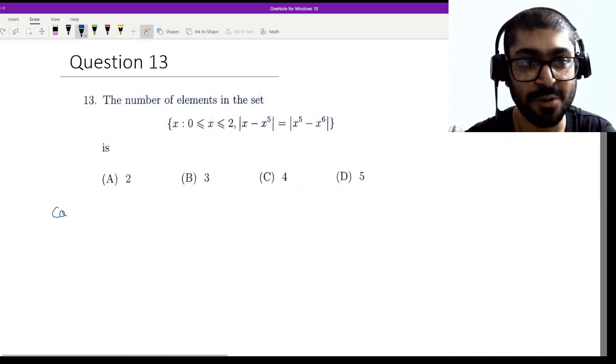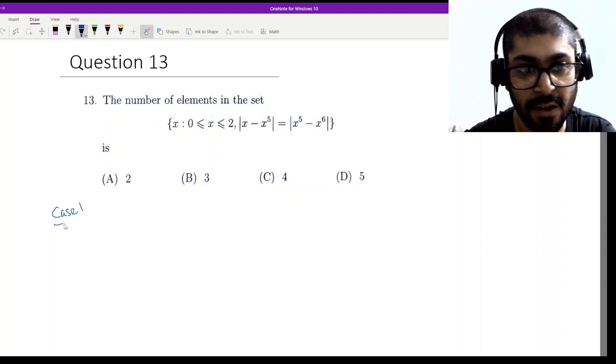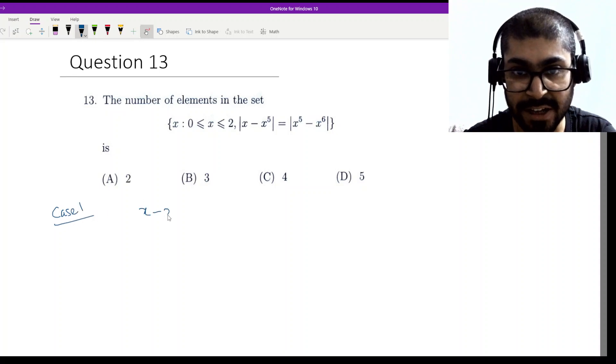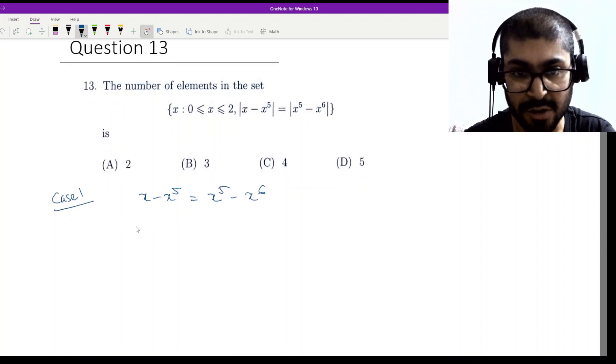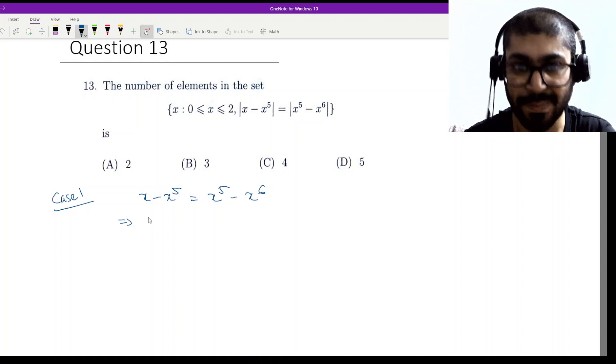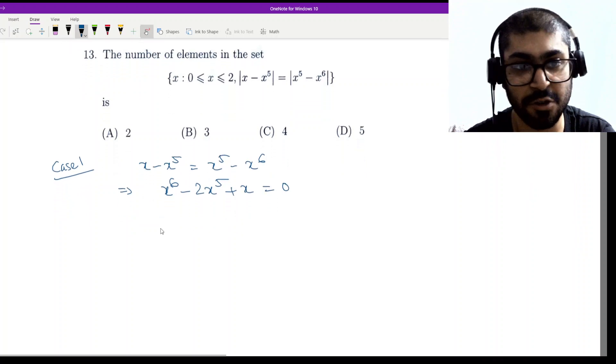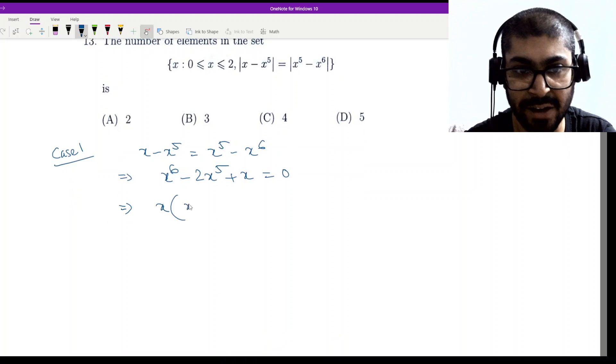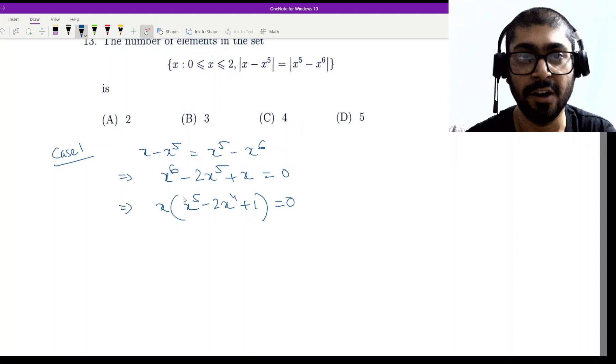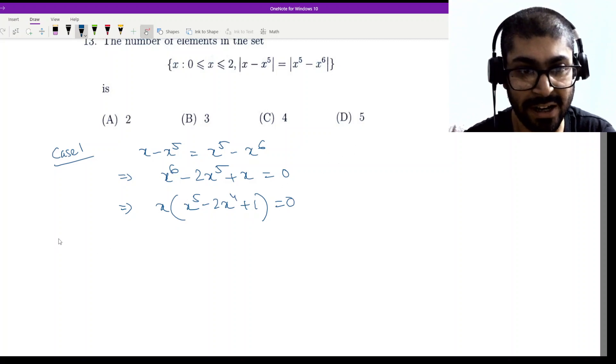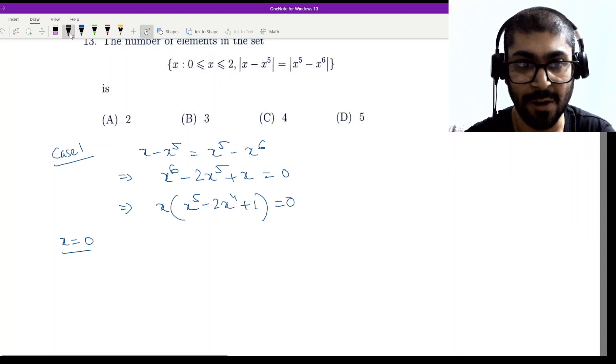What will happen in case 1? In case 1 we will solve x minus x to the power 5 equal to x to the power 5 minus x to the power 6. So if we have to solve this, then we can take x to the power 6 on one side. First we can take x to the power 6 and simplify to get x to the power 6 minus 2x to the power 5 plus x equal to 0.